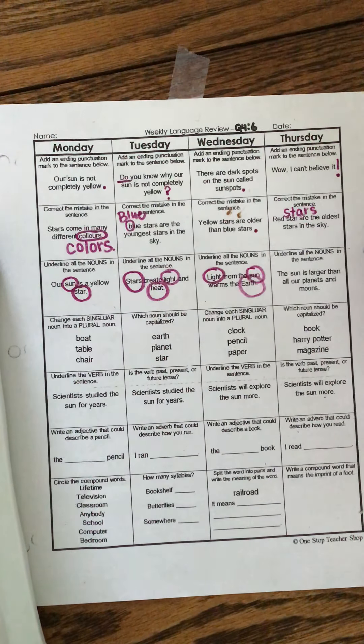Underline all the nouns in the sentence. The sun is larger than all our planets and moons. There's three of them guys. Sun, planets, moons. Good job.